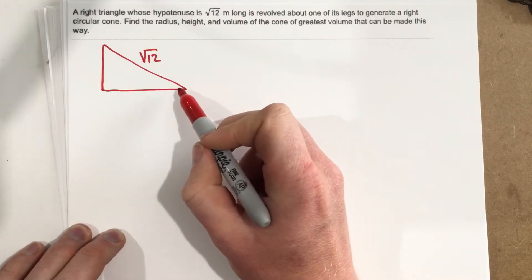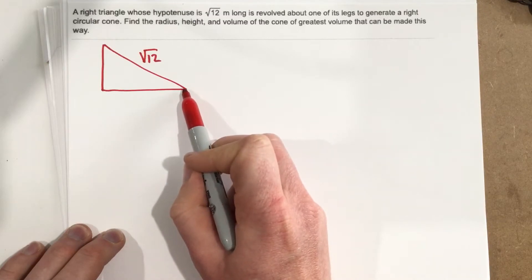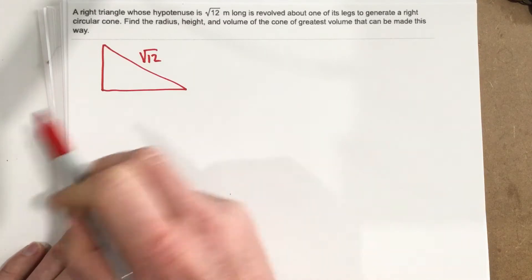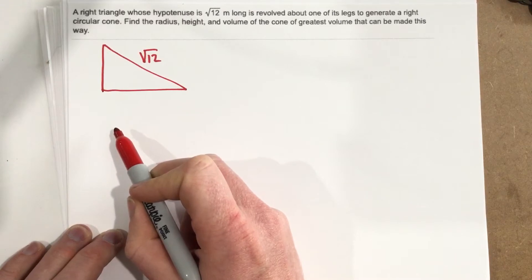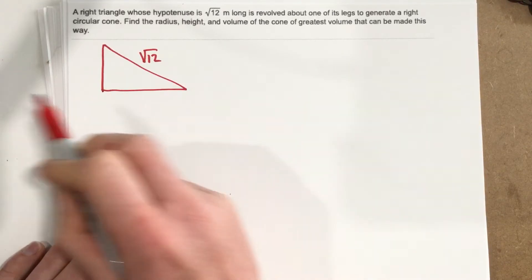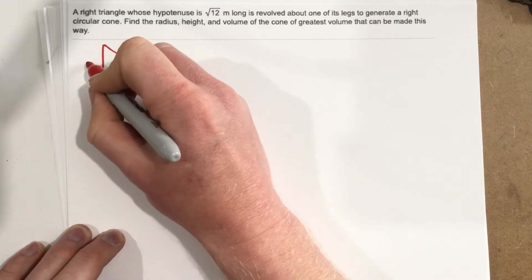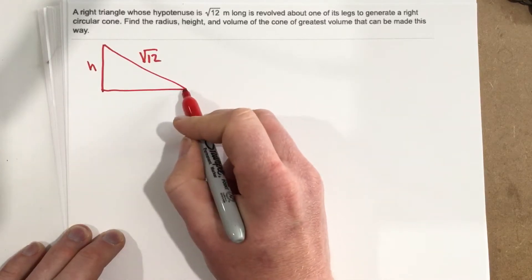What they're saying is they want it to be revolved—imagine this end being spun around this point here and you would end up with a cone. So you spin it around this direction and you end up with a cone, and that cone's height would be this leg and that cone's radius would be this, because this would make a circle if I spun it around this way.